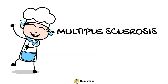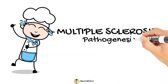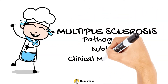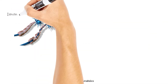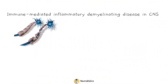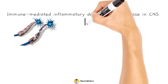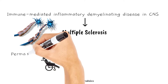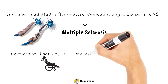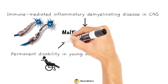Multiple Sclerosis: Pathogenesis, Subtypes, and Clinical Manifestation. The most common immune-mediated inflammatory demyelinating disease of the central nervous system is multiple sclerosis. Among central nervous system disorders, MS is the most frequent cause of permanent disability in young adults, aside from trauma.